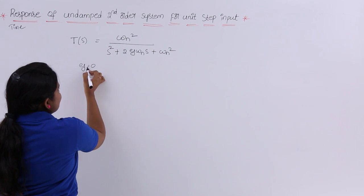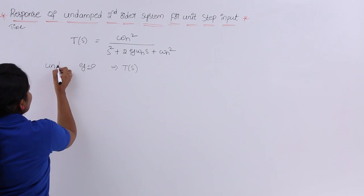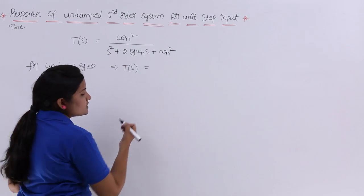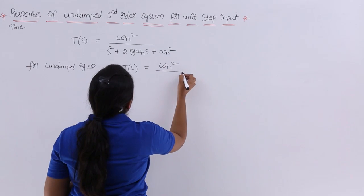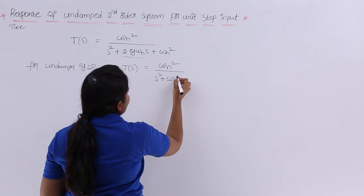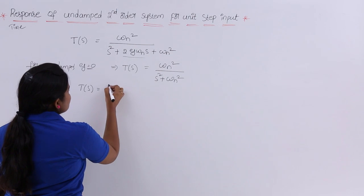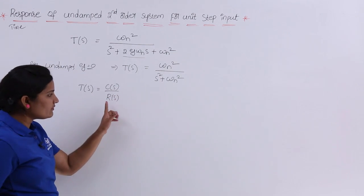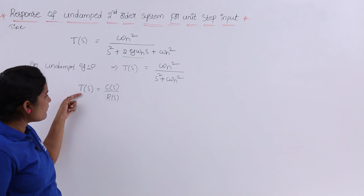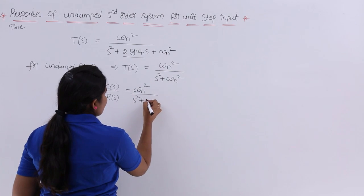To get the undamped system transfer function, we substitute ζ = 0. This gives T(s) = ωn² divided by s² plus ωn², since the middle term 2ζωn·s becomes zero. We also know that T(s) = C(s)/R(s), where R(s) is the reference input and C(s) is the output. So the output transform divided by input transform gives the transfer function.